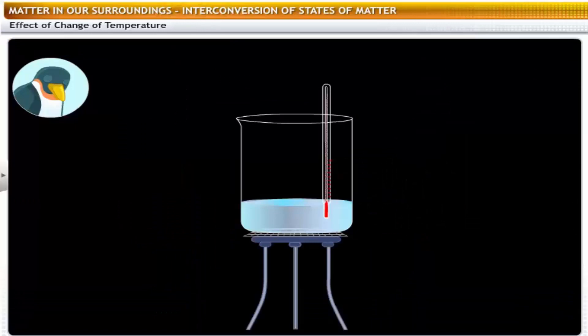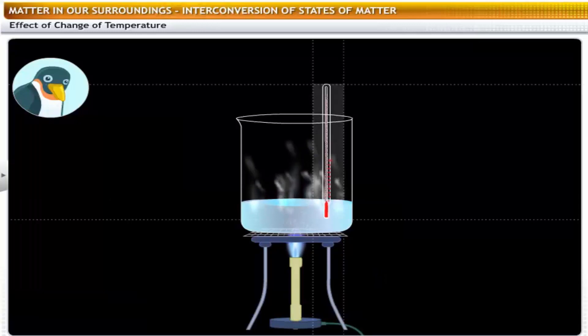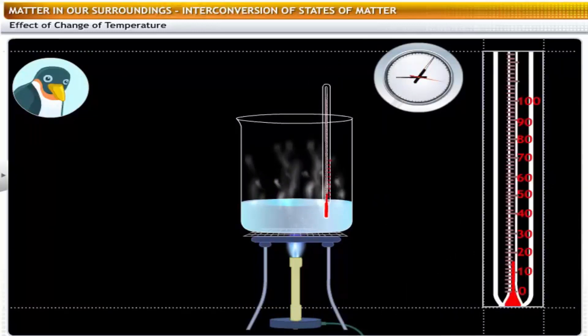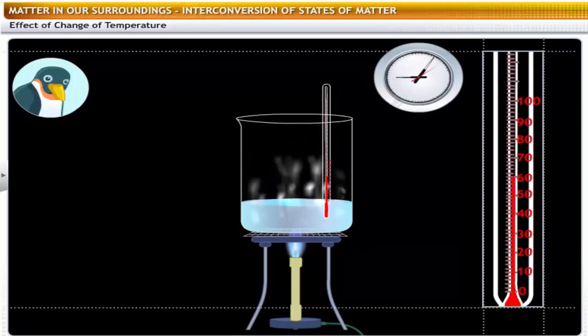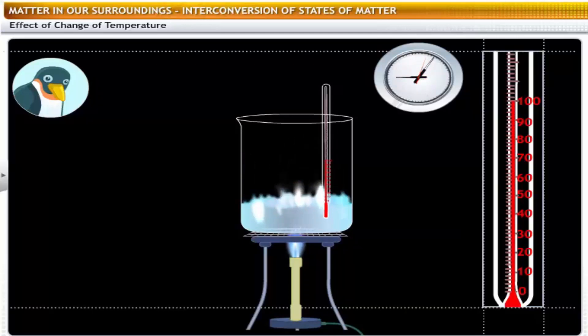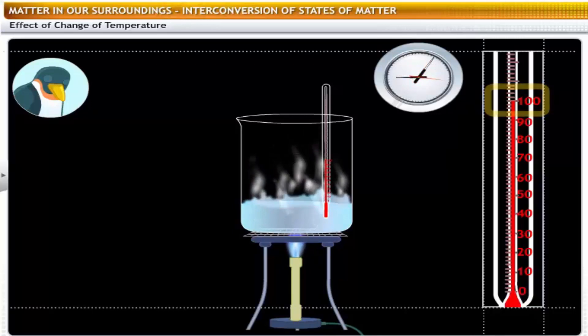Getting back to our experiment, let's continue to heat the water and note down the thermometer reading every minute. Observe that the water has started to boil and steam is rising from its surface. Also notice that the temperature has stopped rising. It is now steady at 100 degrees Celsius. Amazing! Why does the temperature not rise further?